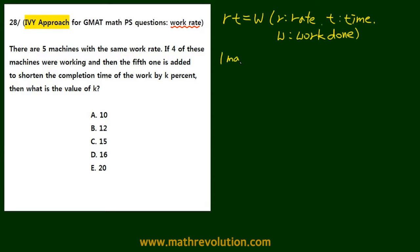So one machine's work rate is R. And the completion time, or the time it takes to complete a task, can be defined as 100T. We use the 100 multiple because this is a percentage problem.